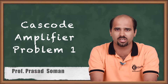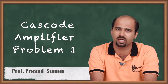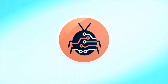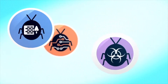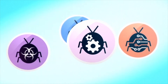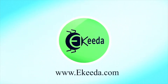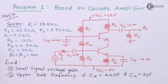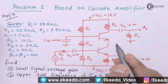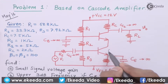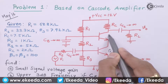Let's come to this particular circuit and try to analyze it and sort out all the findings. Here the circuit is in front of you. R1, R2, R3 are the base resistances for the two transistors, Q1 and Q2.